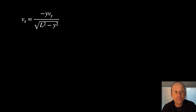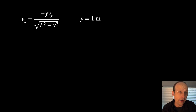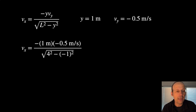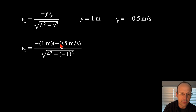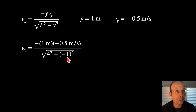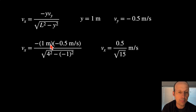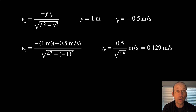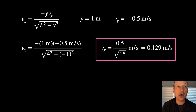Now we find the actual value. Y equals 1, VY equals negative 0.5, and L equals 4. Plugging in: negative 1 times negative 0.5 meters per second, divided by the square root of 4 squared minus 1 squared. The numerator is 0.5, and 16 minus 1 is 15, so the denominator is the square root of 15. The answer is 0.129 meters per second.